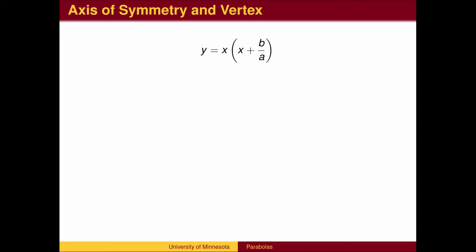In factored form, it is easy to find the roots of a polynomial. In this case, there is an x-intercept of 0 and an x-intercept of negative b over a.